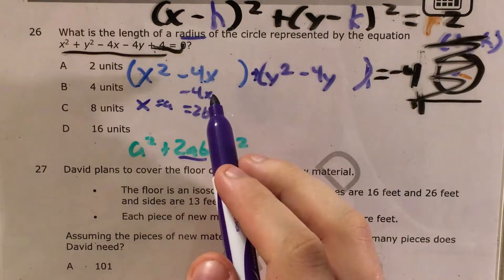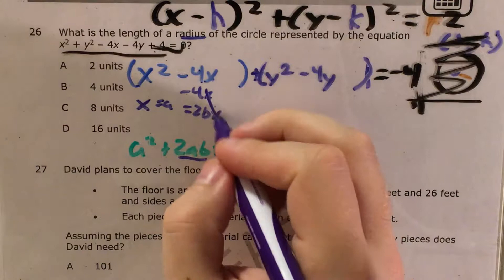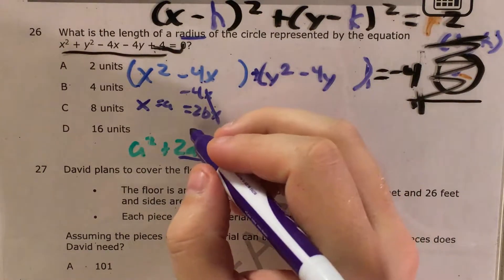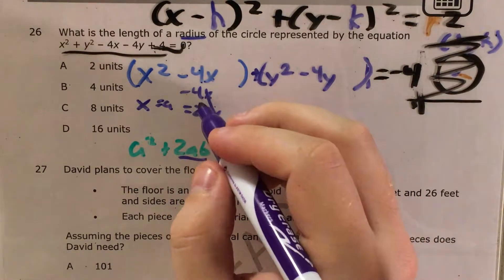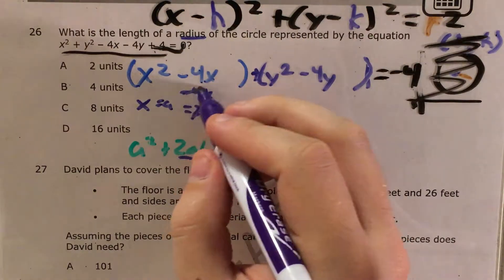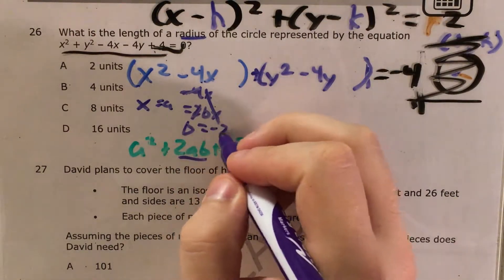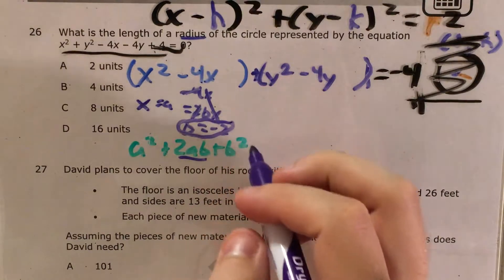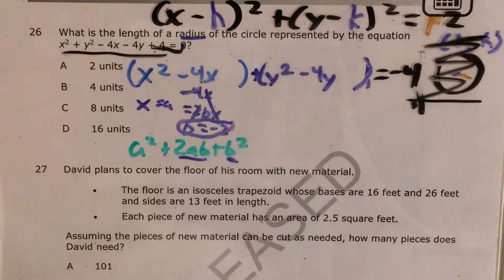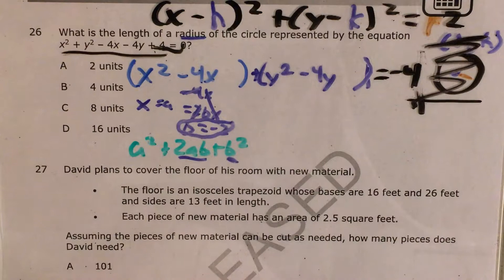If we cross out x from both sides, I know that 2b equals negative 4. And if I treat this like an equation and divide both sides by 2, my b number equals negative 2. And now I take that negative 2 and square it, and it's going to go in here to complete the square.